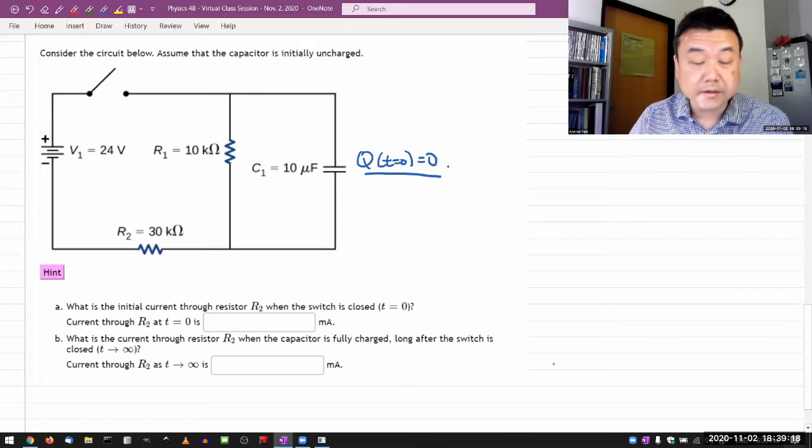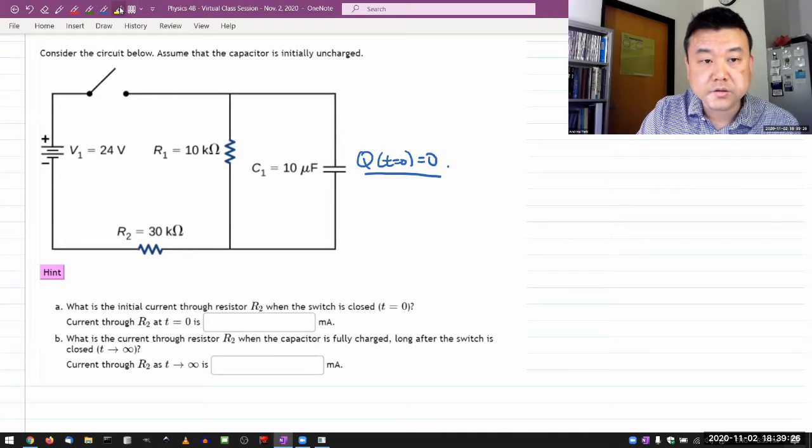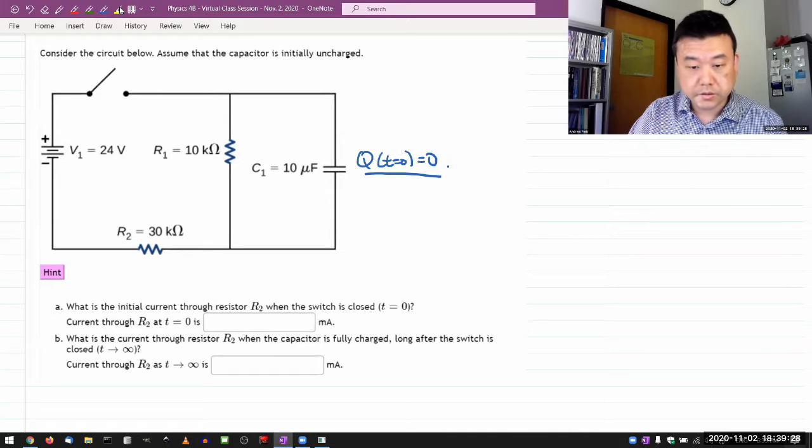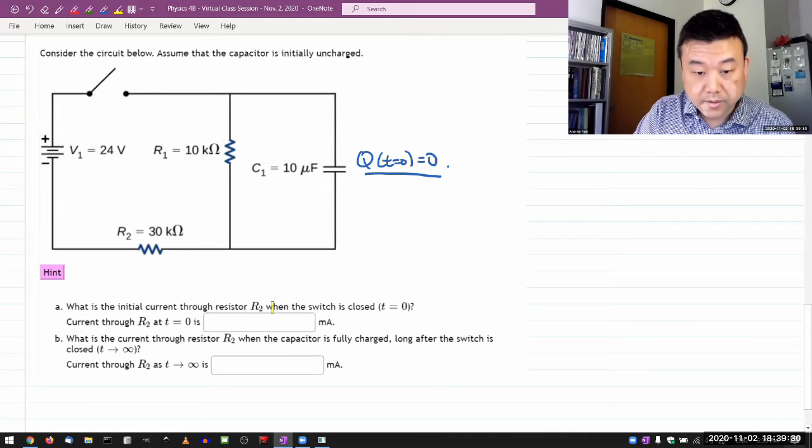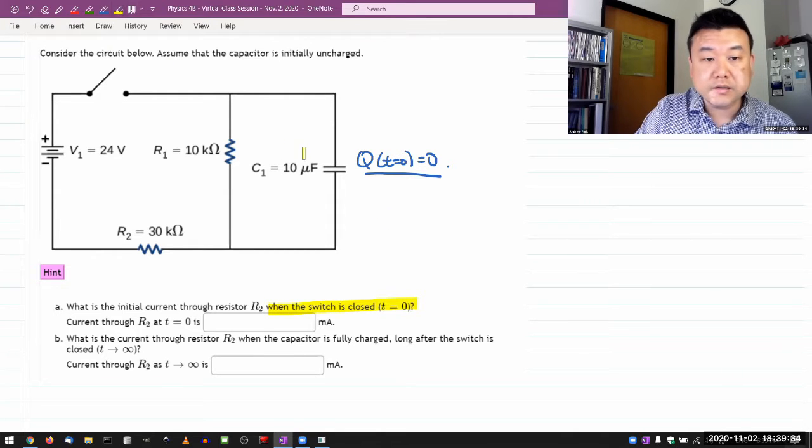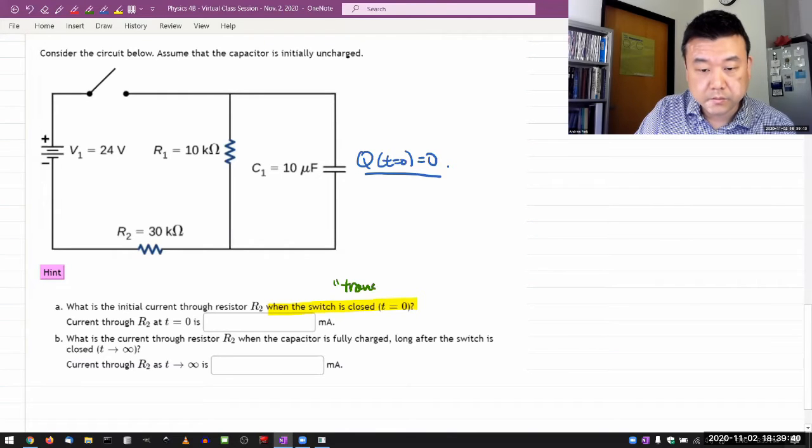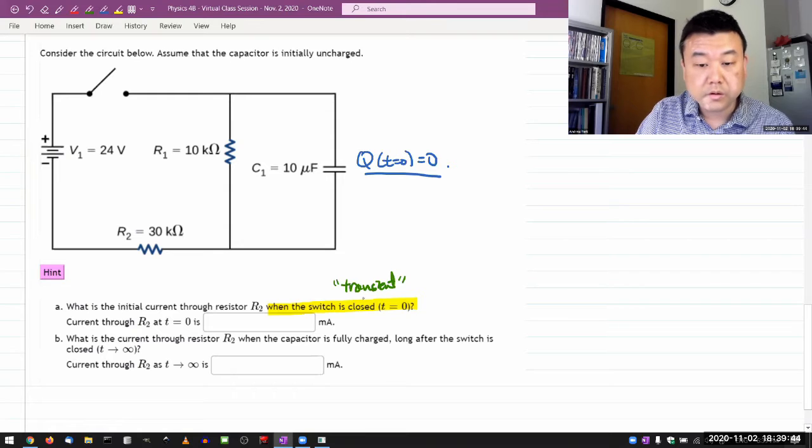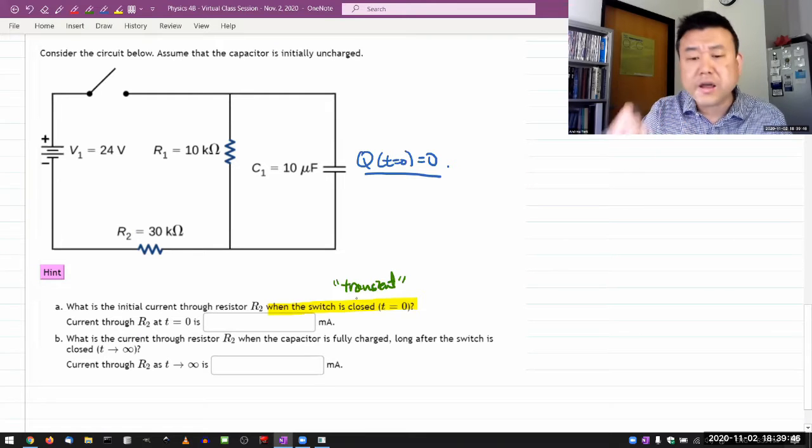And, all right. So, as you are reading this question, this is what I hope you all know. It asks you two different questions. One, about when the switch is closed at t equals zero. This is the transient behavior. Or, well, yeah, it's the transient behavior.